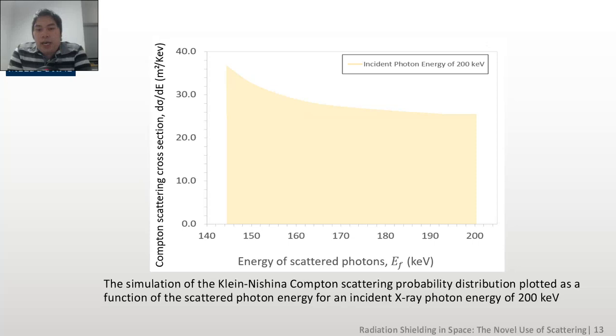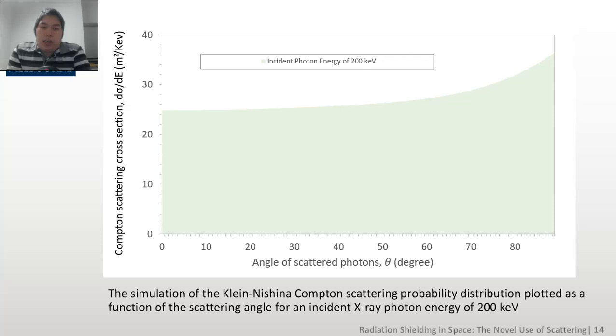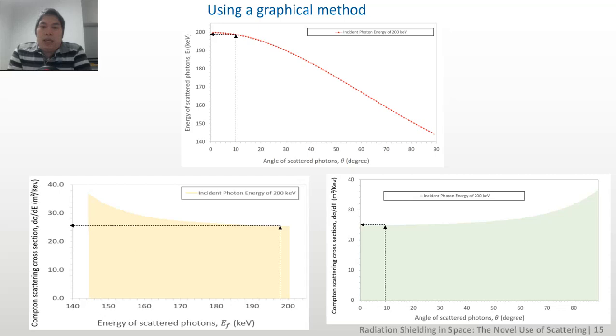And using equation 4 here, two graphs are plotted. The first graph is the Compton scattering cross-section d-sigma by d-EF against the energy of the scattered photons EF, which was generated in Excel, and the second graph is the Compton scattering cross-section d-sigma by d-EF, but in this case with the angle of scattered photons theta. And by using a graphical method, an optimal angle can be used to detect the amount of photons that go in a particular segment of the solid angle.